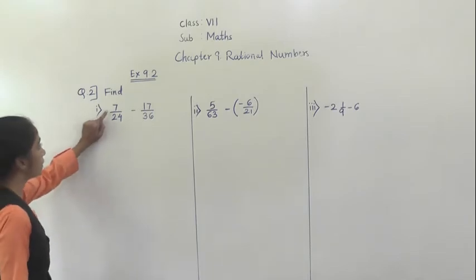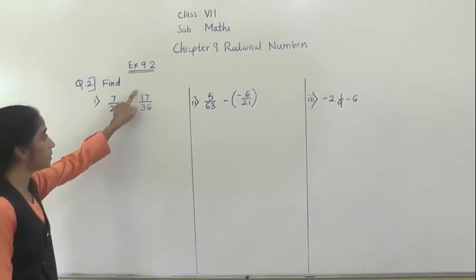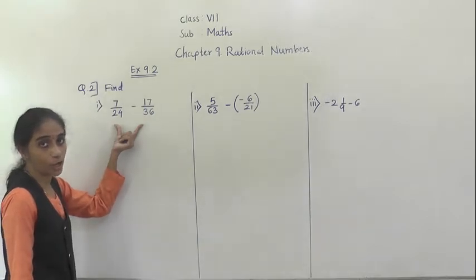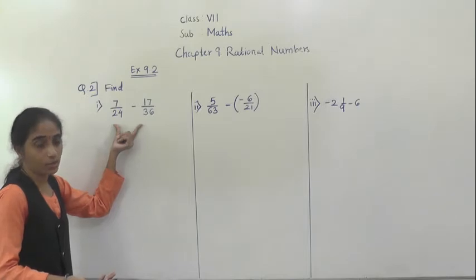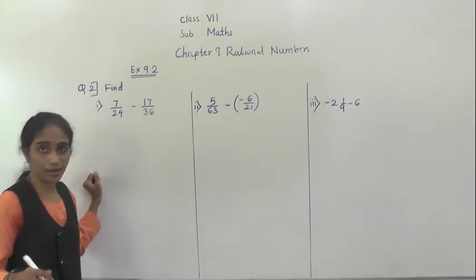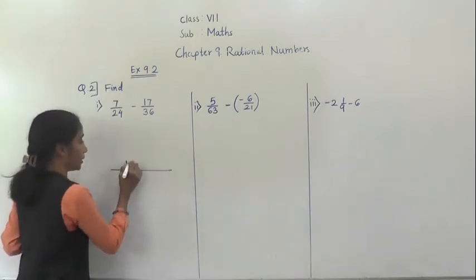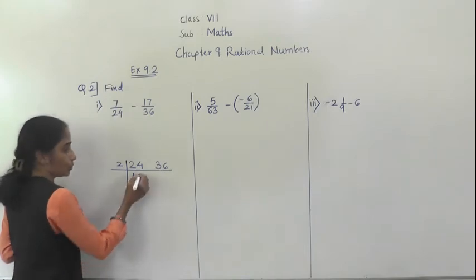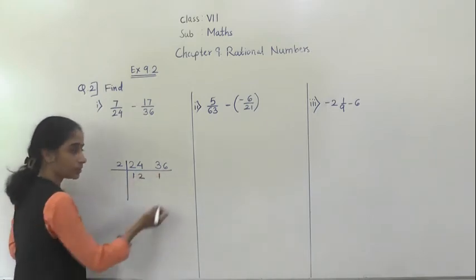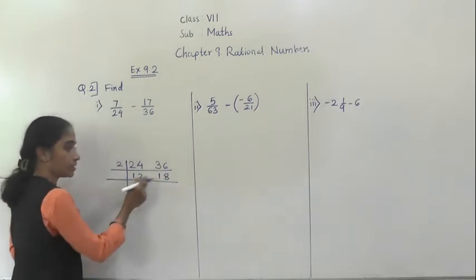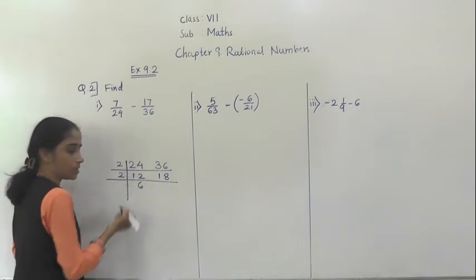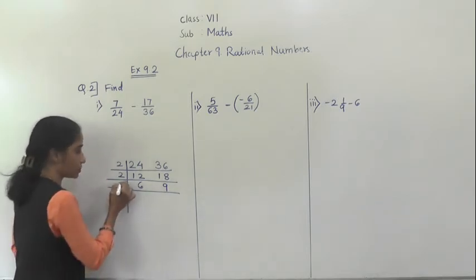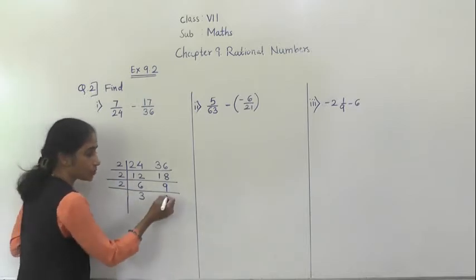Now question number 2. Here the given fraction is 7 upon 24 minus 17 upon 36. We have to do subtraction but first the denominator should be the same. So we have to make them same by finding LCM. I will show you the LCM of 24 and 36. 2 ones are 2, 2 twos are 4, 2 ones are 2, 2 eights are 16. Again both numbers divisible by 2: 2 sixes are 12, 2 nines are 18.